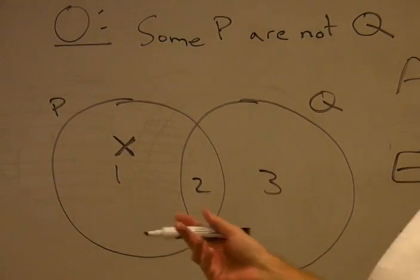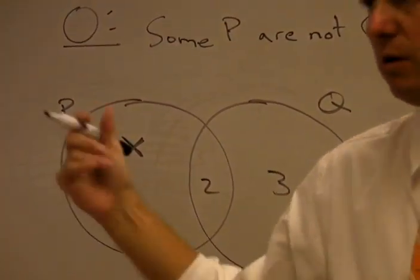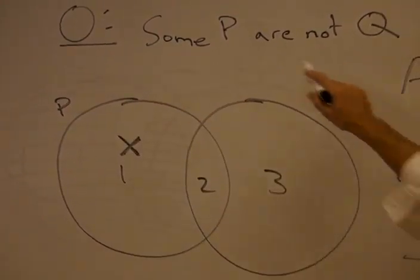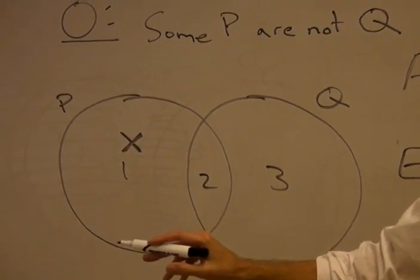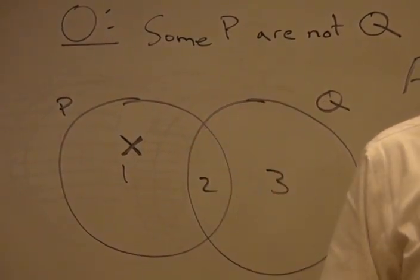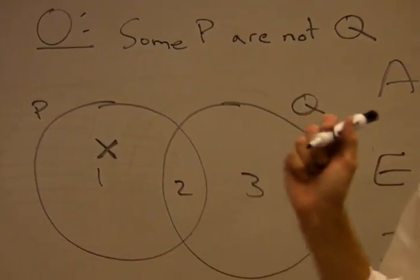This philosophy professor is not a wearer of bow ties. Well, we'd be saying this non-bow tie wearer is excluded from all of class Q. So this is why O statements distribute the predicate.